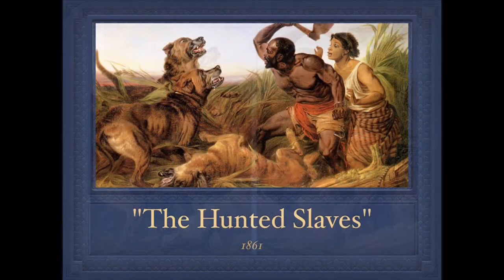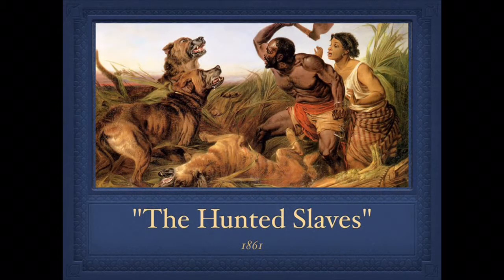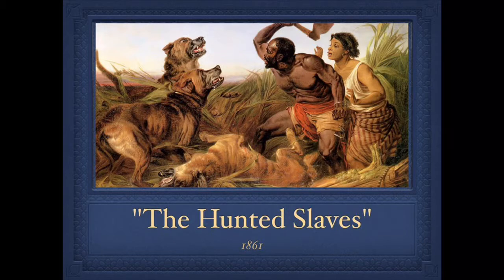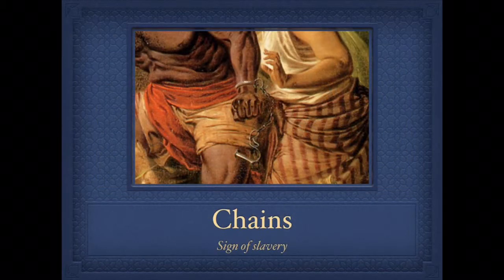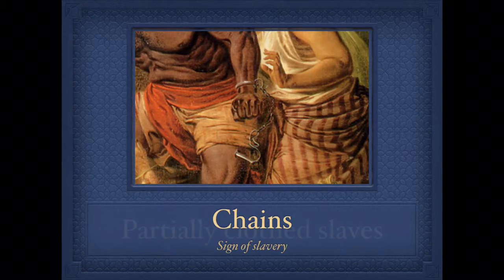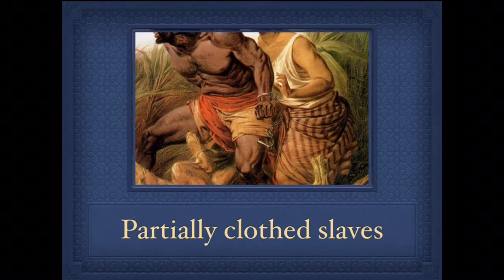In his painting, Richard Ernstow collected the most common symbols of slavery. The chains that were used to control slaves and limit their freedom. The partially clothed slaves signifies that they were humiliated and that their clothing was meant to show their subordinate position.